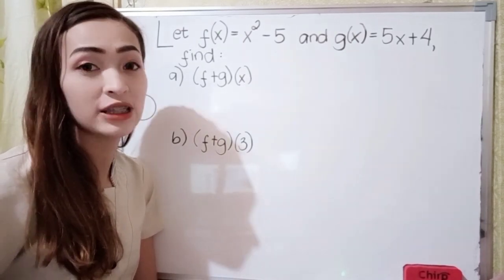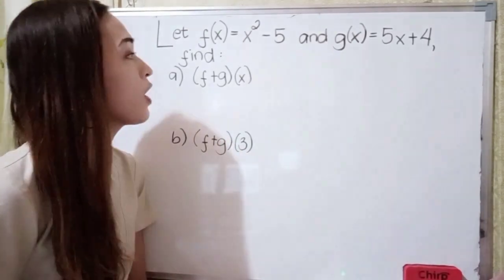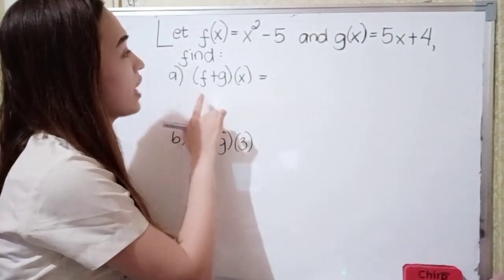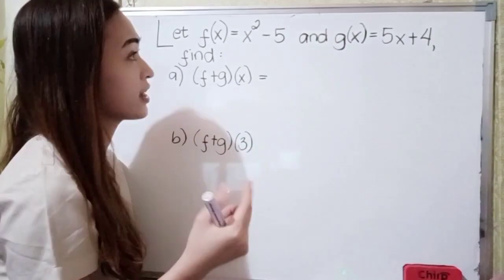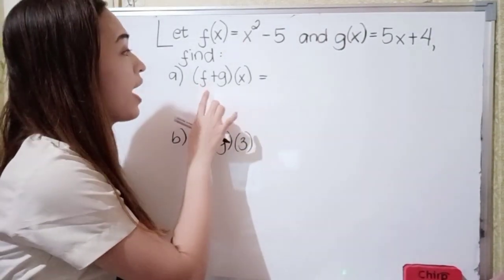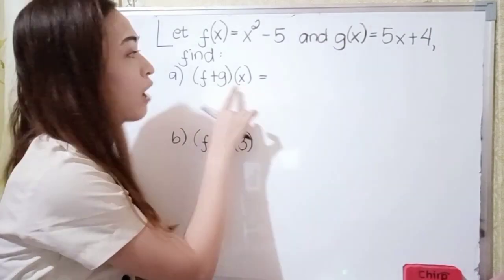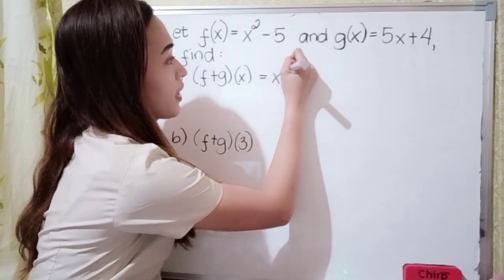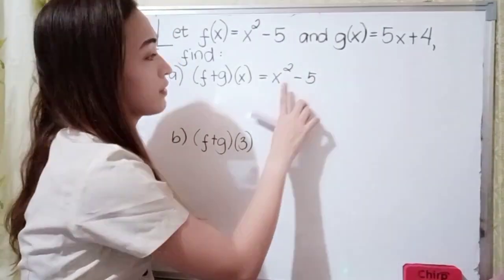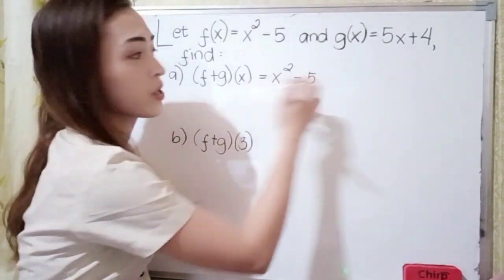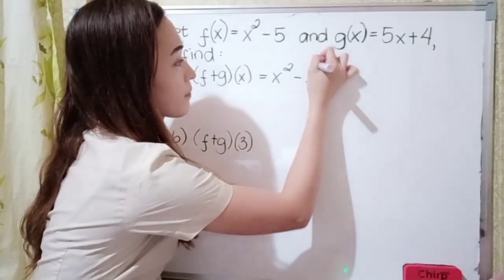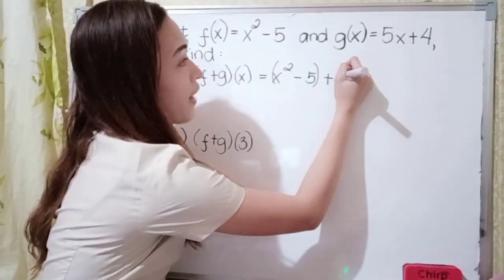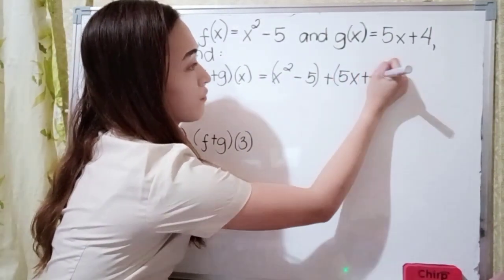So find f plus g of x. This is addition or sum, so let's find the sum of our f of x and our g of x. Our f of x is x squared minus 5, plus our g of x which is 5x plus 4.